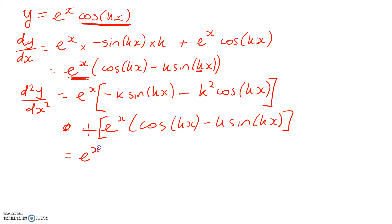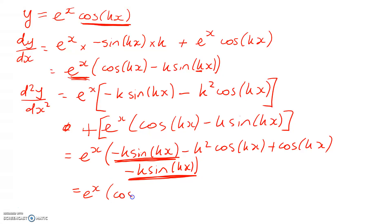So collecting up like terms, I've got e to the x times negative sine k. I'll just do it without talking. So that's the first line of cleanup. And now I can see that I've got some like terms in here. I've got minus k sin kx, and then again down there. So we get this. e to the x times cos of kx minus 2k sin kx minus k squared cos of kx.